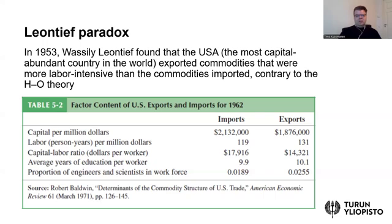On this slide, I have also taken from the Krugman et al. textbook a table which is based on Robert Baldwin's article. This is also confirmed in later 1962 data on US exports and imports. We can see from this data that the capital-labor ratio in dollars per worker — that's the third row — for imports was almost $18,000, whereas for exports it was only $14,000. This indicates that indeed the USA was, even in the early 1960s, importing more capital intensive goods than it was exporting, which seems to empirically contradict the main prediction of the Heckscher-Ohlin model.